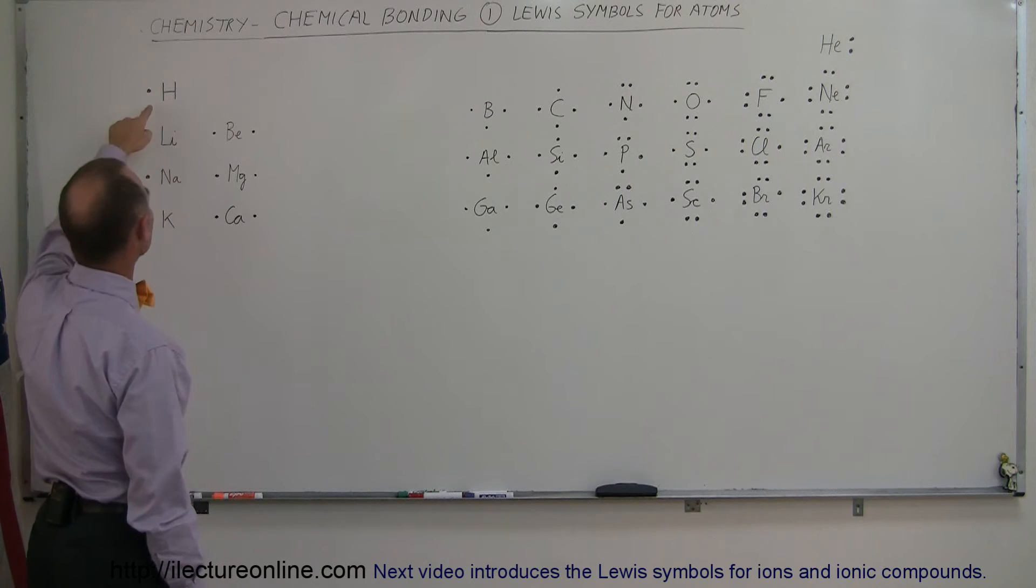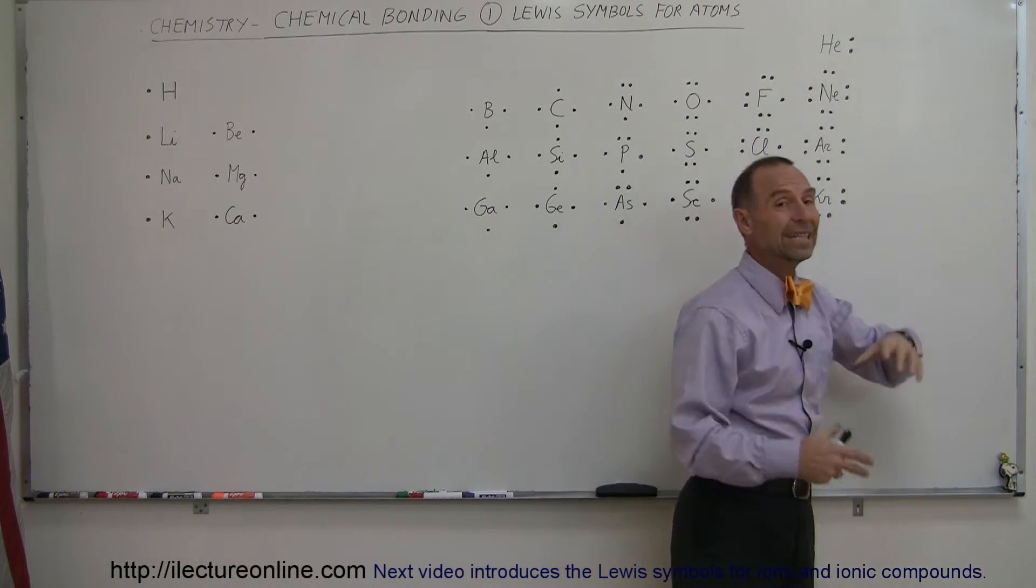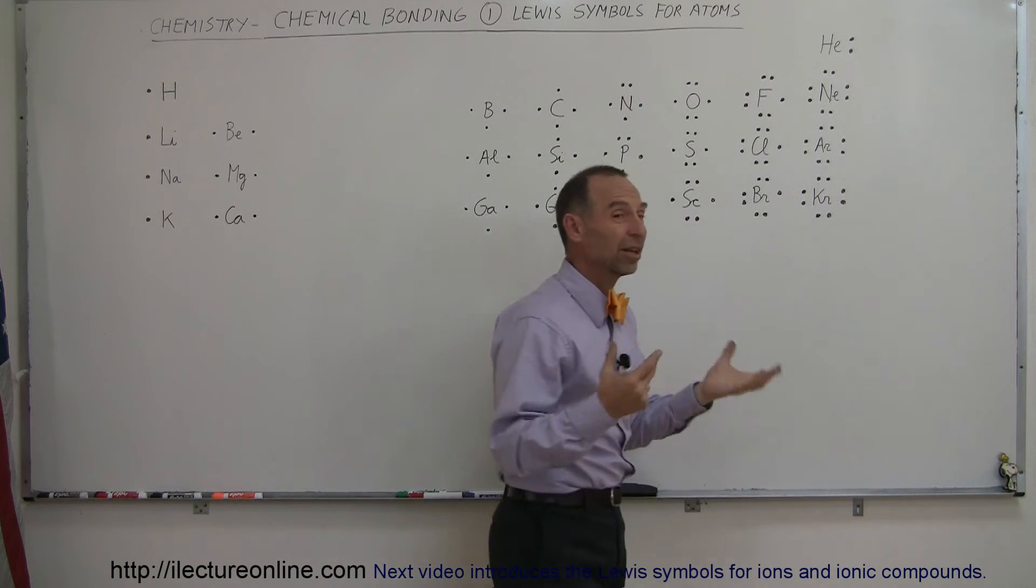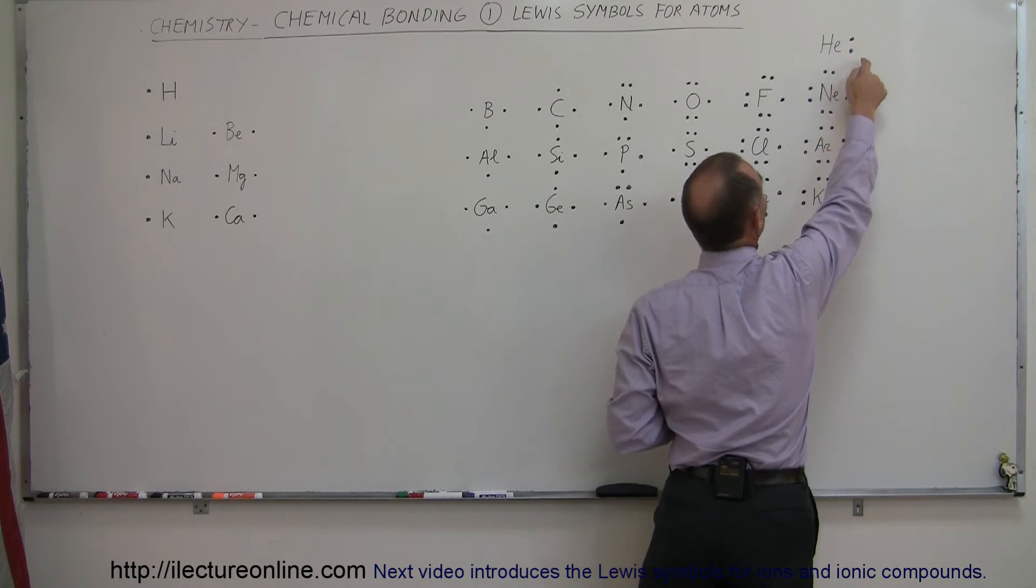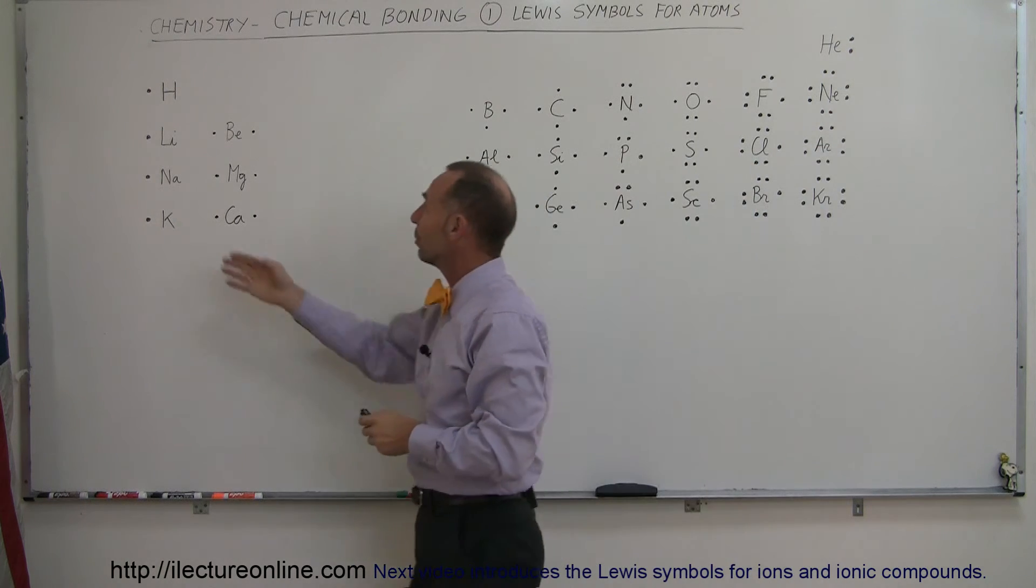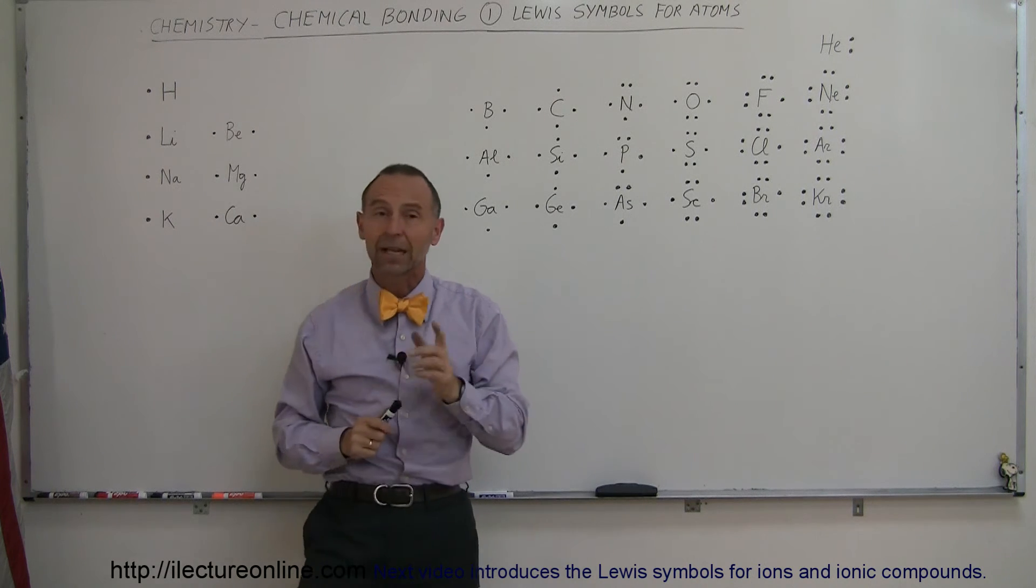So if we take a look here, hydrogen only has one and helium has two electrons in the outermost energy level which is the only energy level. And so here we know that the helium energy level is filled because it has two electrons. Here we know that hydrogen only has one out of the two spots filled with an electron and that's how it's indicated.